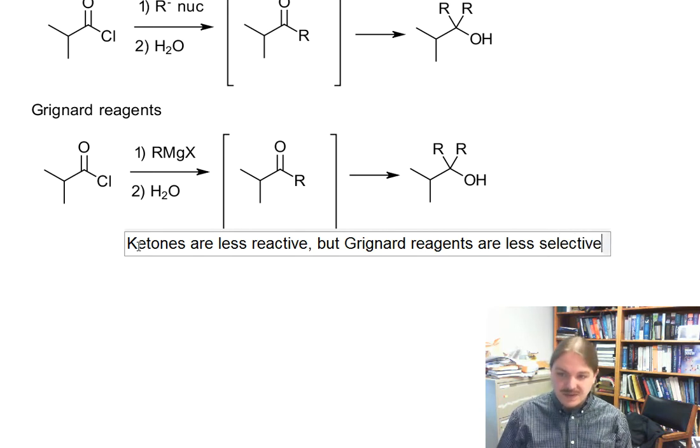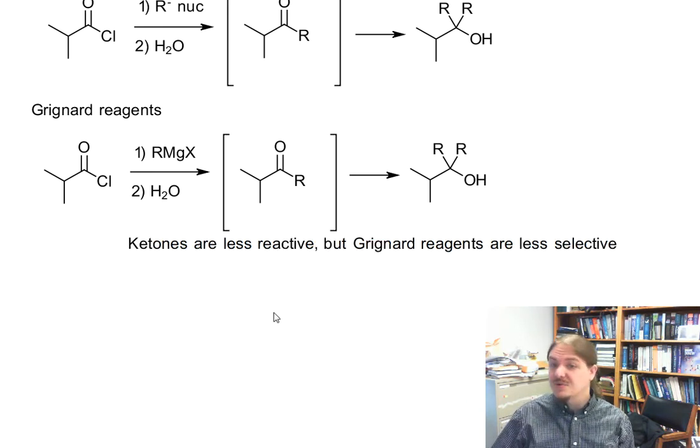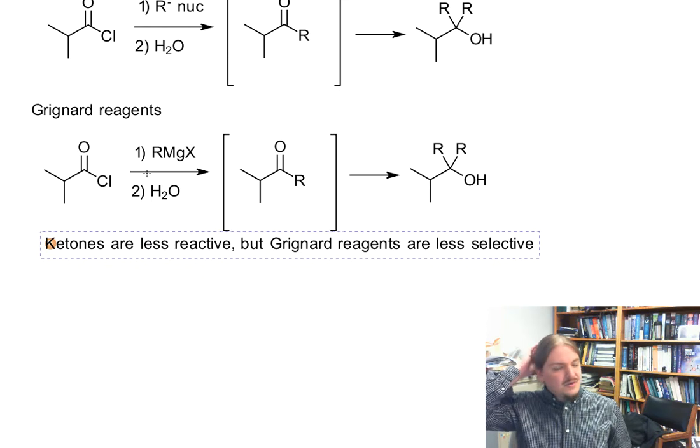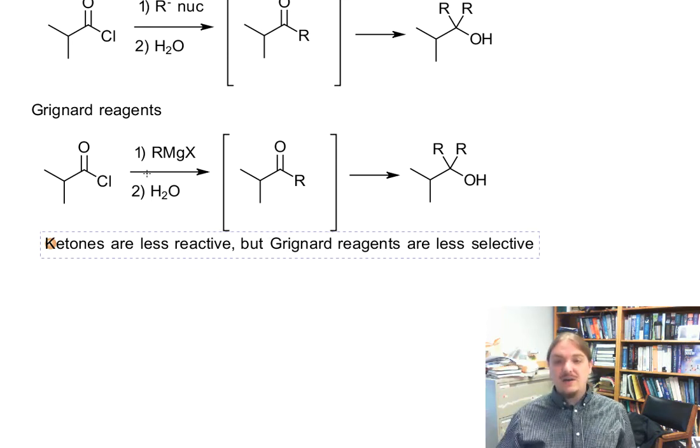To put this in the terminology I introduced in the last video, ketones are less reactive than acid chlorides, but Grignard reagents are less selective. Since Grignard reagents aren't very selective, they'll react with most carbonyl electrophiles, even ones that are less reactive.